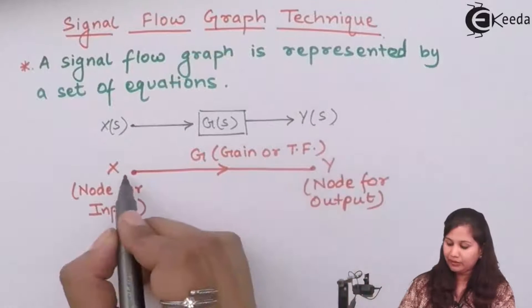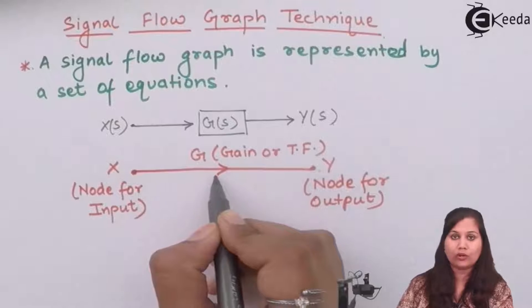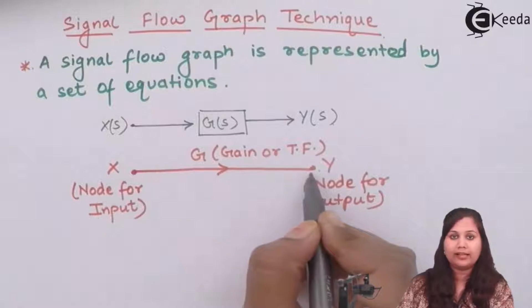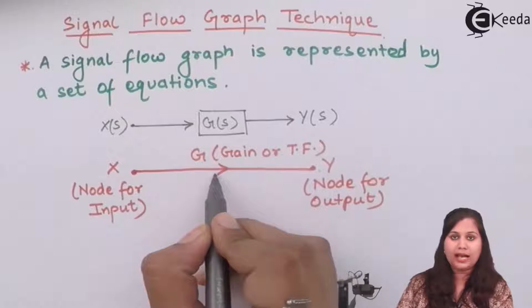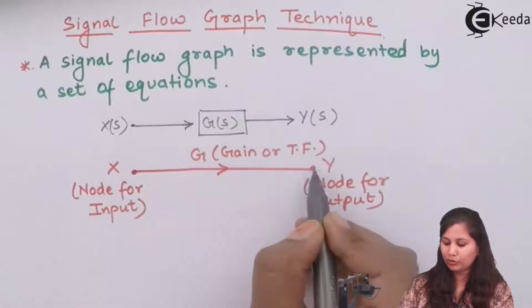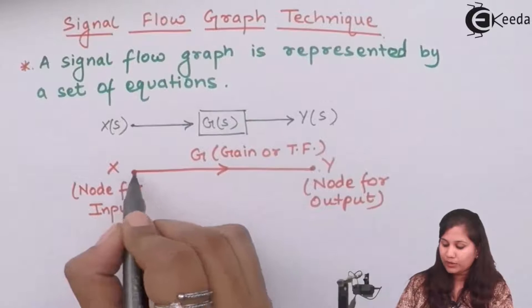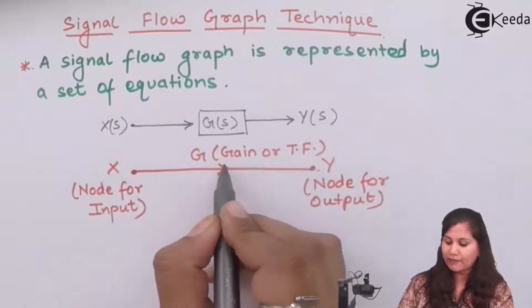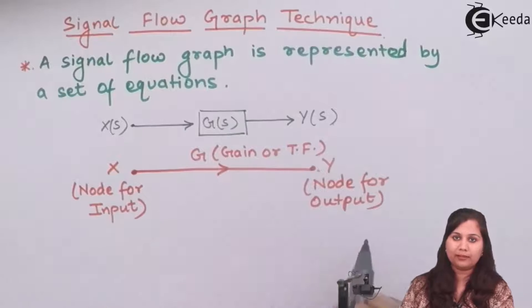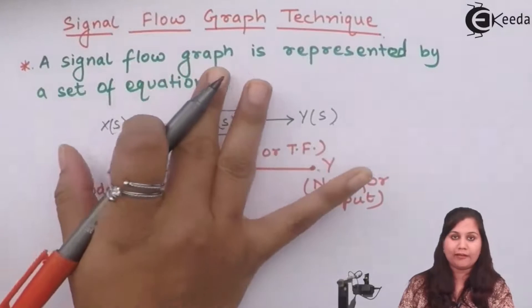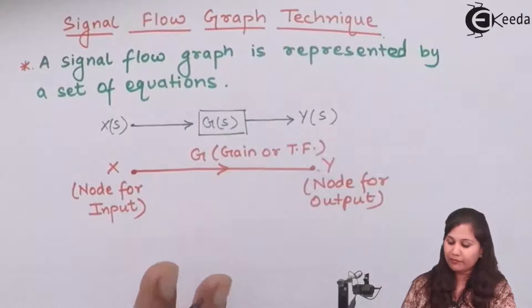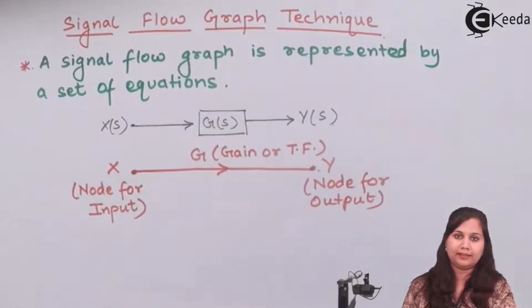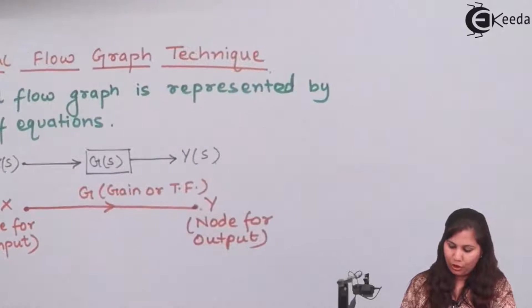This is the signal flow graph representation of this system. We have two nodes - one node is for the input which is named as X and another node is for the output which is named as Y. Between these two nodes we have a branch with an arrow showing the direction of flow of signal - from the X node to the Y node. So the nodes are connected by the branch and the arrows indicate the direction of flow of signal.